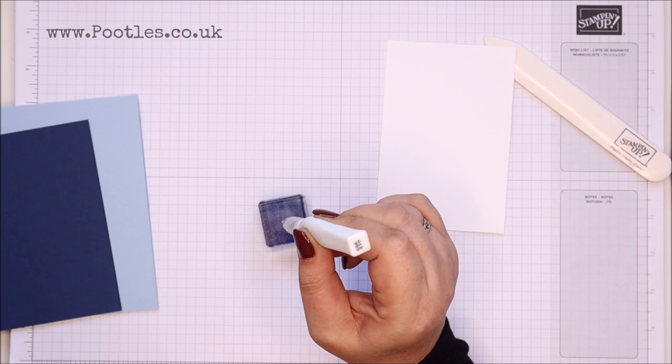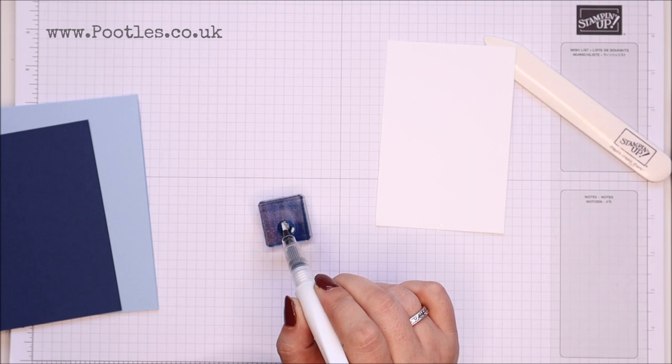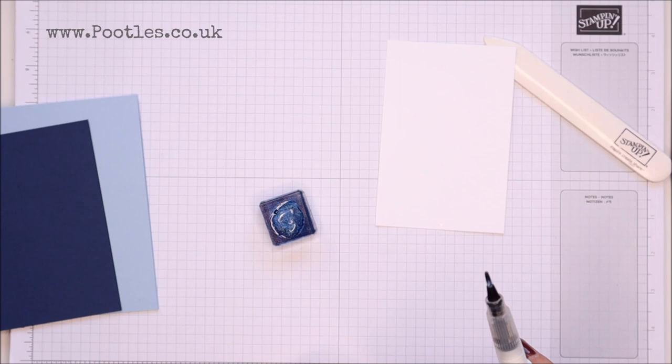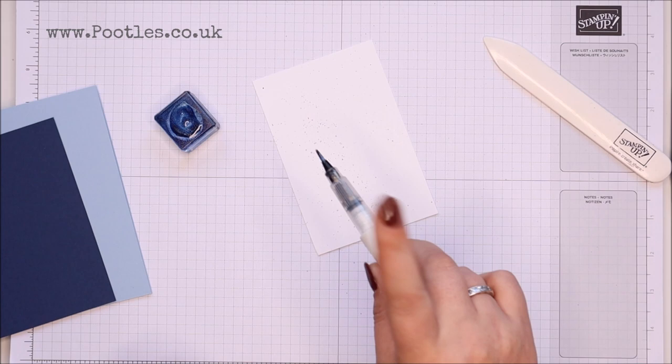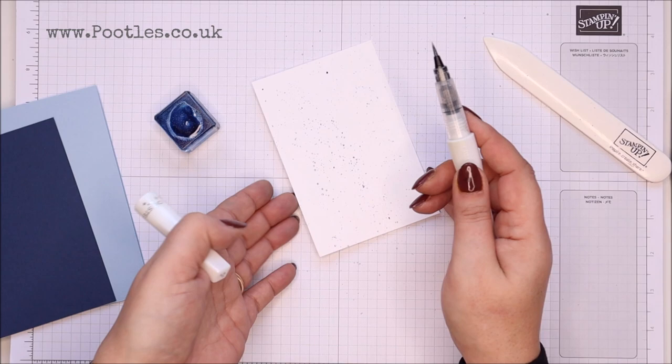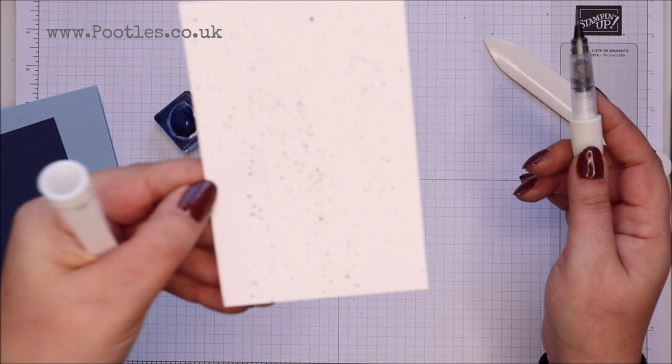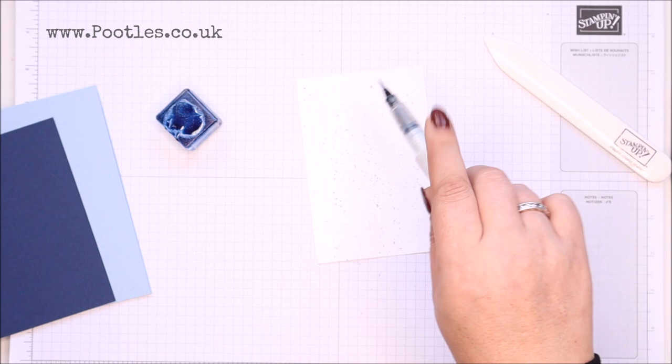And when you get a nice blob, there we go. Now, normally you'd stick that on a piece of paper, but it would be wasted. So I'm going to take this and I'm going to flick, flick, flick. And hope I'm not going to get big blobs. And flick some more. And hopefully you can see those blobs. It's just a pretty little effect.